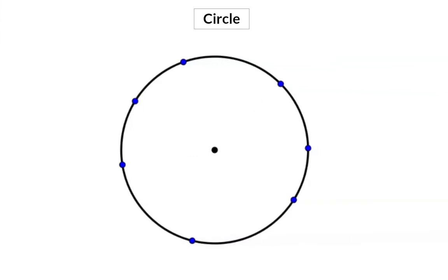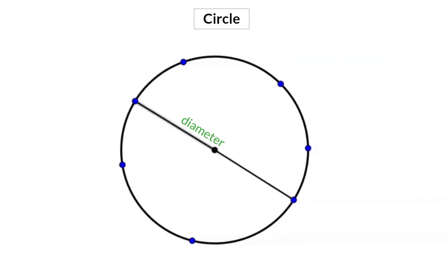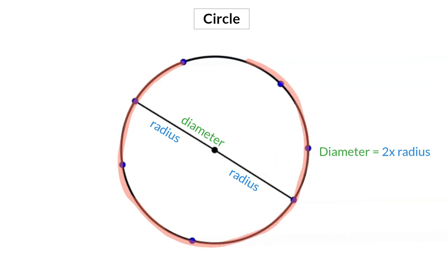We can also draw a diameter. A diameter is a line that is drawn from the edge of the circle through the center to the edge of the circle again. So a diameter consists of two radii. The perimeter of the circle is then the length or distance you travel when you move right around the circle to end where you started.